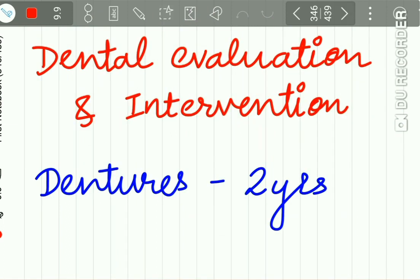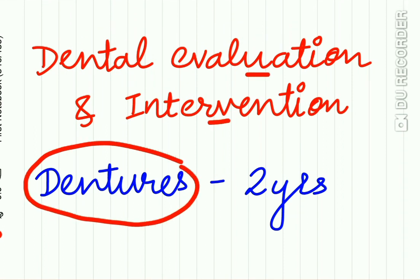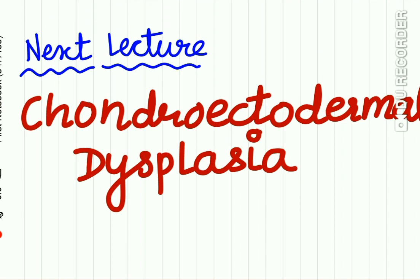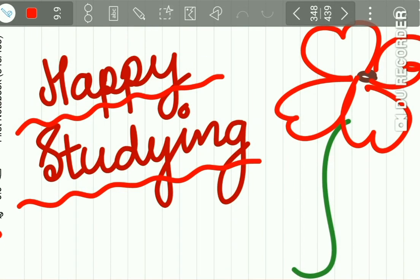Regarding treatment, there is no specific treatment. Dental evaluation and intervention are important — patients may be required to use dentures from as early as 2 years of age. The next lecture will be on chondro-ectodermal dysplasia. I hope you liked this lecture on hereditary ectodermal dysplasia. Please subscribe to our channel. Happy studying!